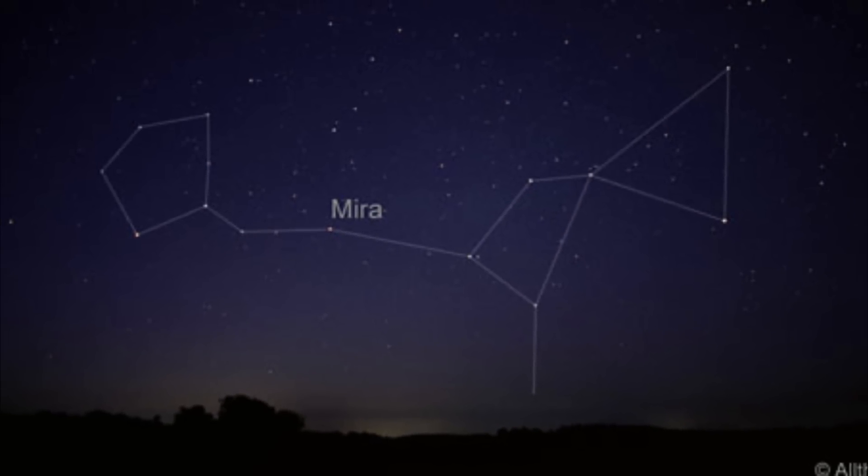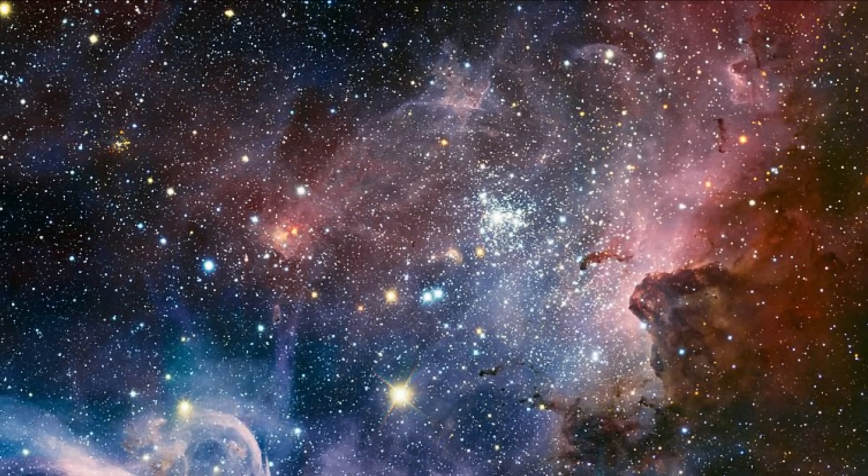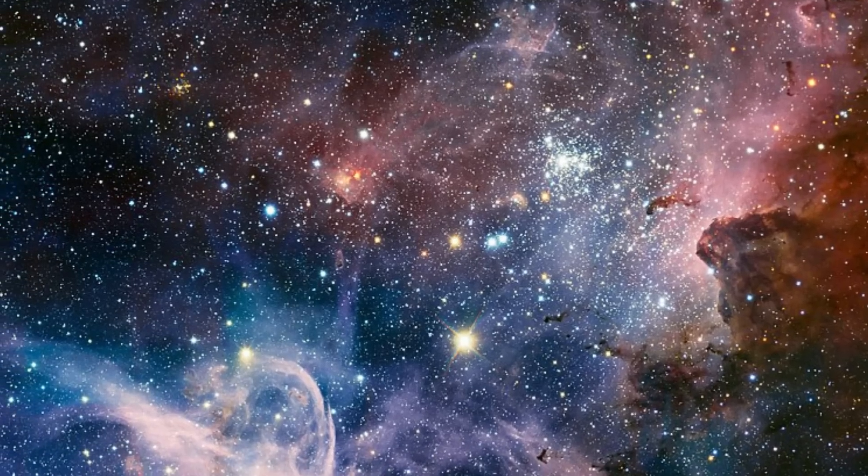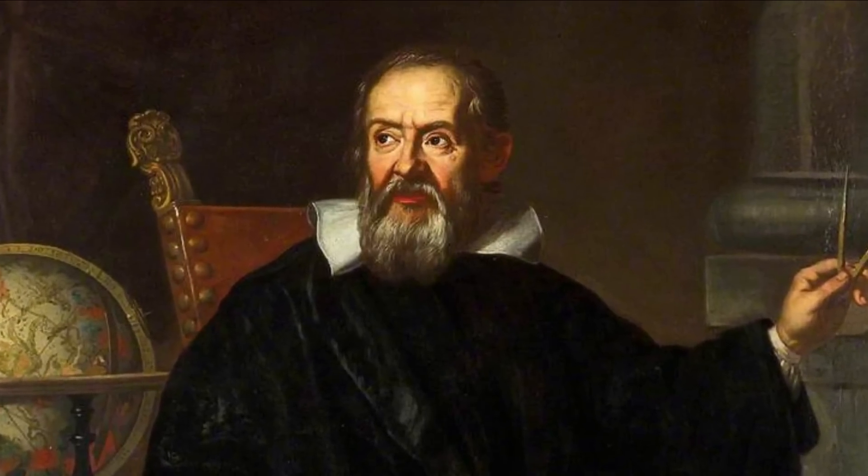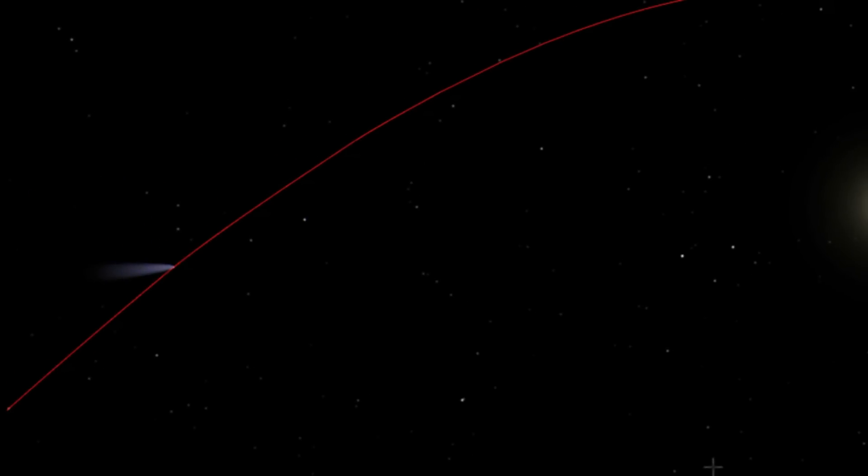And it only got weirder as the months went on. Because in September, it didn't get bigger and brighter, instead it shrank and got dimmer. Then by October, the entire star had vanished from the sky. Perplexed, Fabricius decided to not try and find the star as he felt it wasn't worth the effort for what was clearly not a new star.